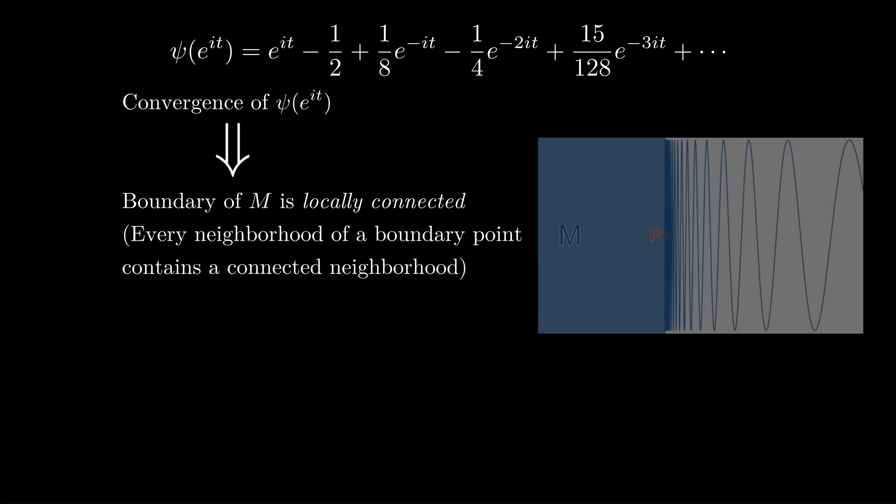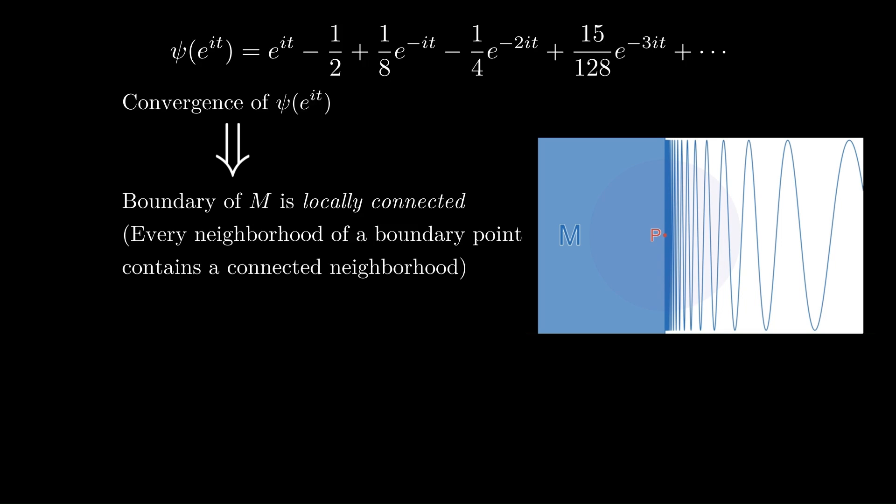A counterexample to this would be if we had some kind of crazy oscillation near a boundary point, like in this diagram, where as we zoom in, no matter how far we go, there will always be these pieces of the oscillating waves that are cut off by the region, and so we don't ever get a connected set. So that's the sort of thing we want to avoid. And it's conjectured that this is true, but it's not actually known.